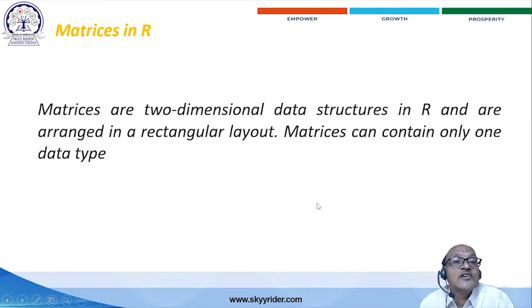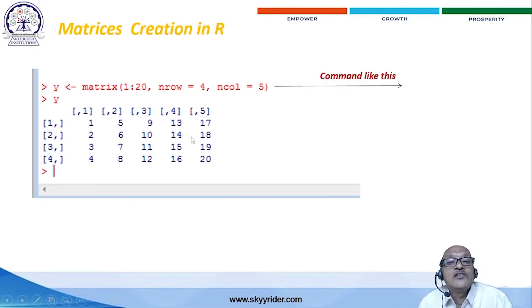The second one would be the matrices as a data type. Matrices are the two-dimensional data structures in R in a rectangular layout. The matrices can contain only one data type. While at the time of typing in R editor, y is the variable, y is equal to matrix, that is the command.